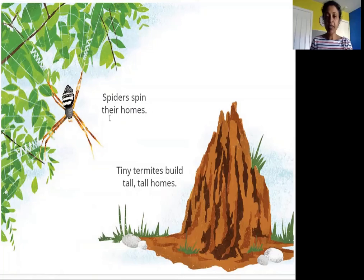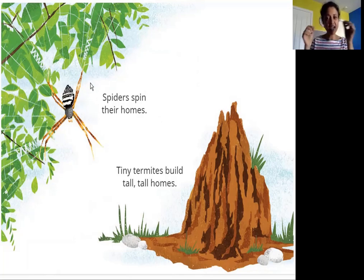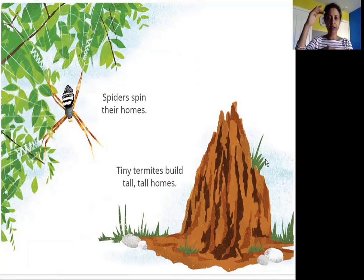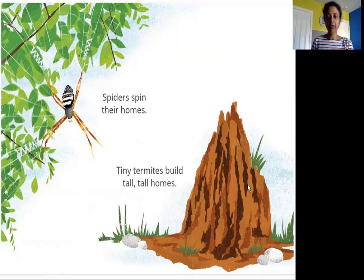Spiders spin their homes. Tiny termites build tall, tall homes. Spiders spin these thin, fine threads and create their homes — their home is a spider web. Termites, though they are tiny like ants, build homes that look like hills — small hills but big for their size. They build their tall, tall homes out of mud.